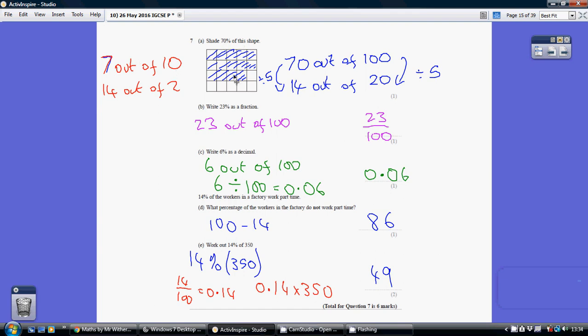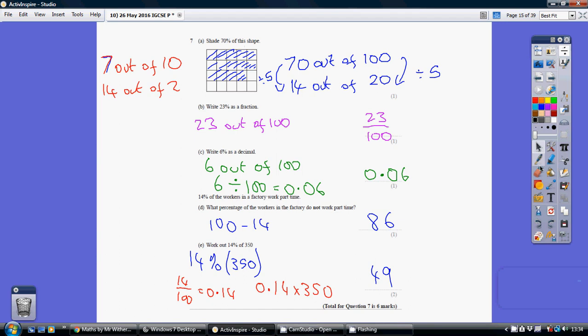Now we've got 20 squares here. So 7 out of 10 is the same as 14 out of 20. I don't know why that says 2. That should be 20.